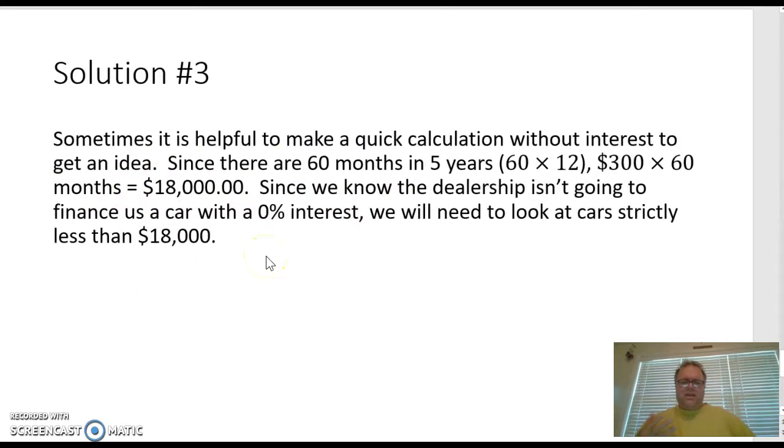Kind of like what we did with the previous chapter, sometimes it's helpful to make a quick calculation just without the interest to see around what our answer should be. Since there's 60 months in five years, because 5 times 12 is 60, and we're making $300 payments, we're making 60 of those $300 payments. So the total amount of payments that we're going to be making over the five-year period is $18,000. That's if the dealership did a 0% interest, this would be the amount of the car that we could afford.